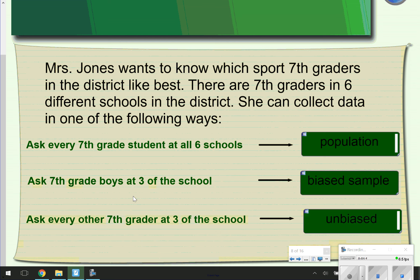The other way that she could do a survey would be asking every other 7th grader at 3 of the schools. That would be more of an unbiased sample or more representative of the population, because it's selected at random and the population is evenly represented.